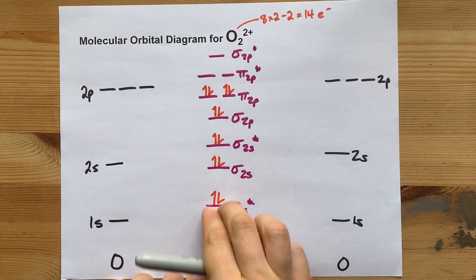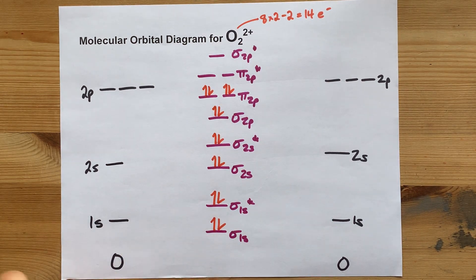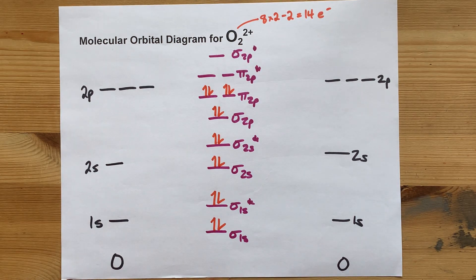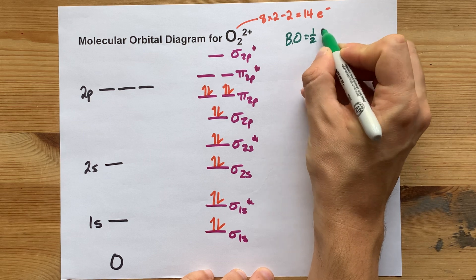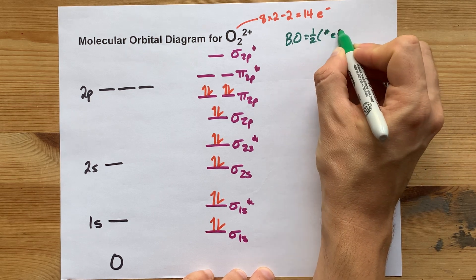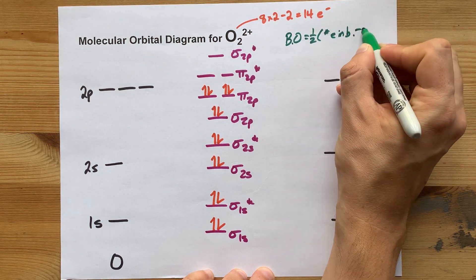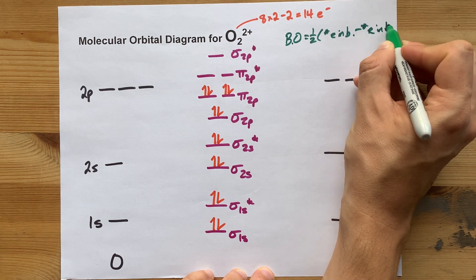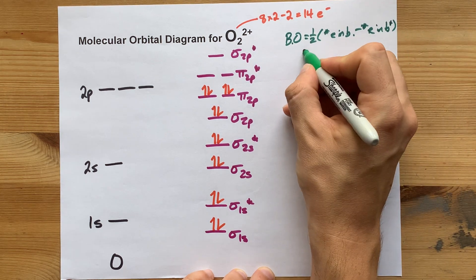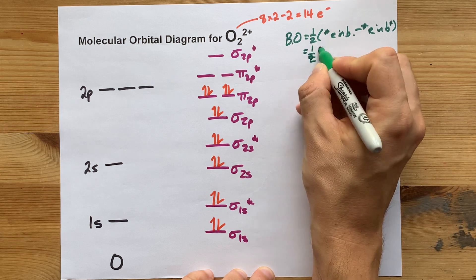Here's the filled molecular orbital diagram for O2, 2 plus. Your teacher might ask you for the bond order, which is one half of the number of electrons in bonding orbitals minus the number of electrons in antibonding orbitals. You'll have to count that to calculate it.